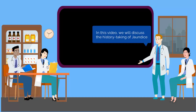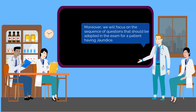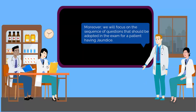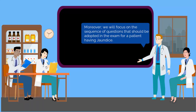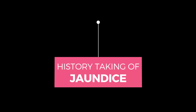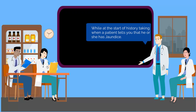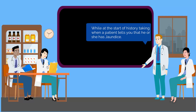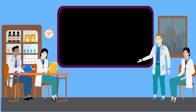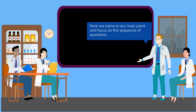In this video, we will discuss the history taking of jaundice. Moreover, we will focus on the sequence of questions that should be adopted in the exam for a patient having jaundice. Let's start — when at the start of history taking a patient tells you that he or she has jaundice, ask the patient: is there anything else that is bothering you? Now we come to our main point and focus on the sequence of questions.